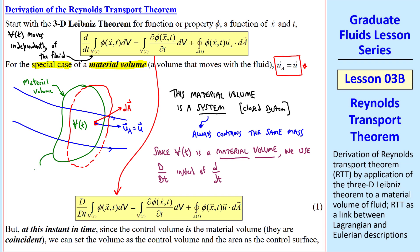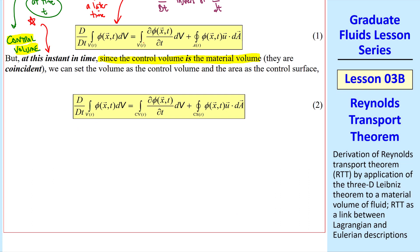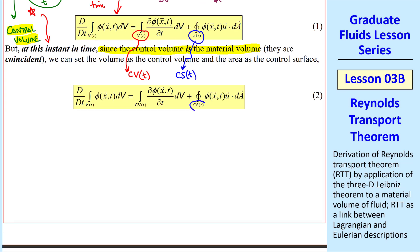This material volume that we drew is at some time t, and after it moves, this is at a later time. Let's also consider this a control volume. This control volume is the same green blob or potato that I drew at first, at time t. So at this instant in time, since the control volume is the material volume — in other words, they're coincident or lie on top of each other — they're the same fluid. We can set the volume as the control volume and the area as the control surface. So in this equation, V of t on the right-hand side becomes the control volume, which is a function of time. And surface area A of the control volume, we call the control surface, also a function of time.